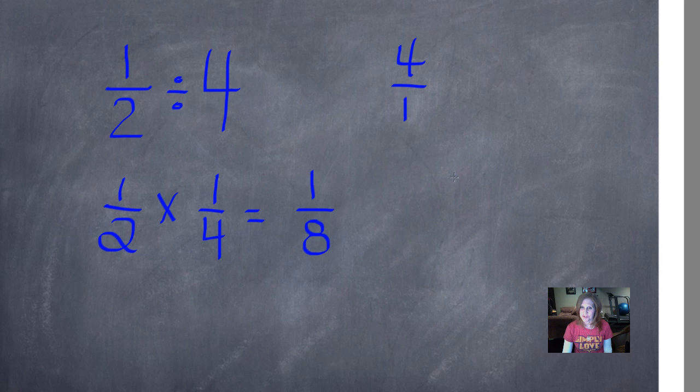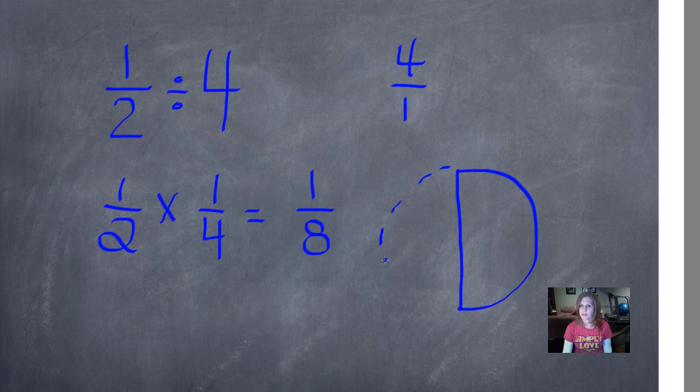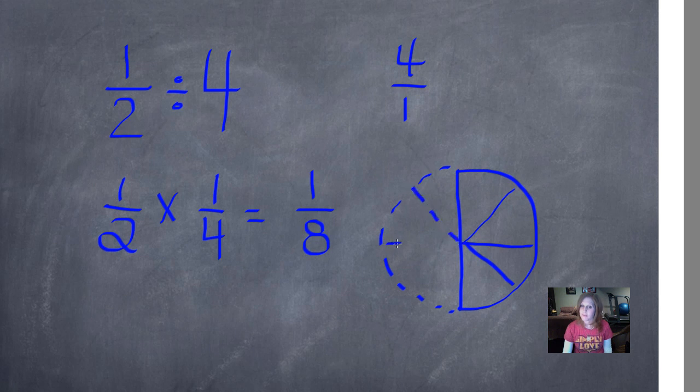Let me show you why that's true. If we have half - here's the other part of the circle that you can't see - here's half. If we divide it into 4 parts, then we would actually have 8 pieces. This is actually 1 eighth of a whole, because even though these pieces aren't here, they still count as the part of a whole that you would use.